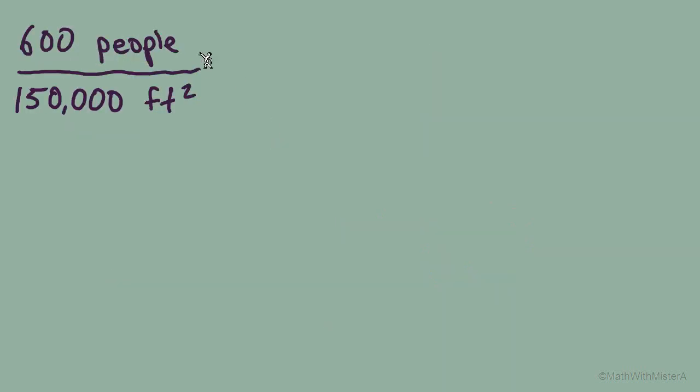So I've recopied the rate from that last example, 600 people in 150,000 square feet. And we know that this population density is equal to the population density in our unit rate and the other fractions that we use throughout this problem. And we can show that by simply dividing numerator by denominator, and we'll get back to that 0.004 people per square foot. So you can divide to show that fractions are equivalent.